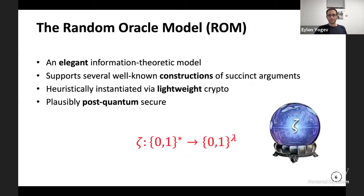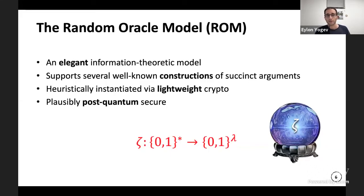Why do we study the random oracle model? It's an elegant information-theoretic model that supports well-known constructions. You can take these constructions into reality via a heuristic implementation of the random oracle. Constructions in this model are also plausibly post-quantum secure — and in fact the constructions we have are proven to be post-quantum secure.